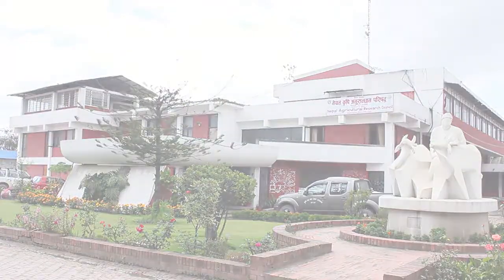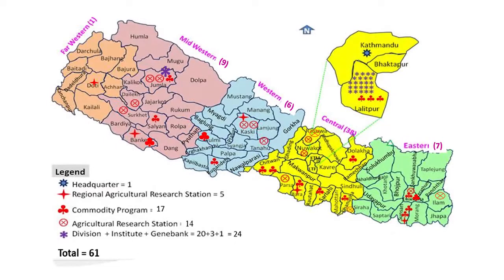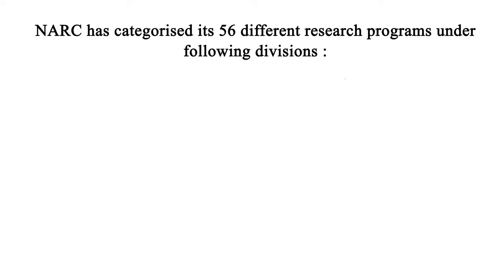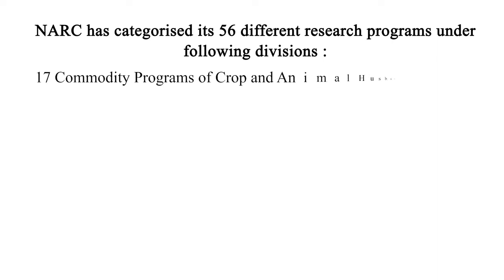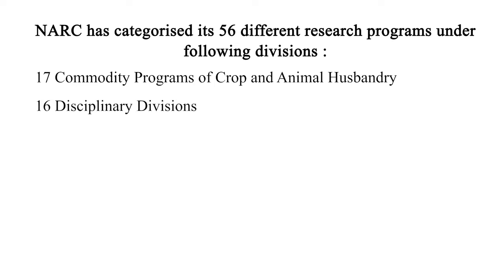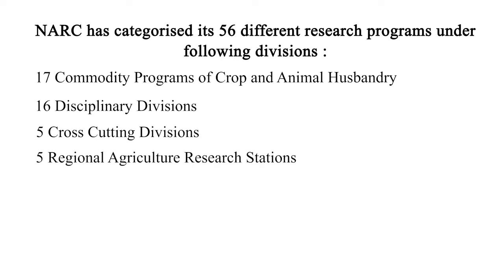NARC has categorized its 56 different research programs on the following divisions: 17 commodity programs of crop and animal husbandry, 16 disciplinary divisions, 5 cross-cutting divisions, 5 regional agriculture research stations, and 13 agriculture research stations.